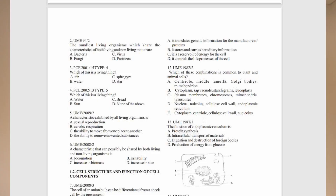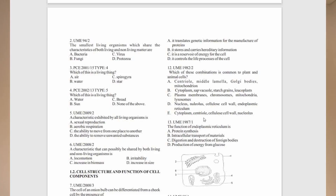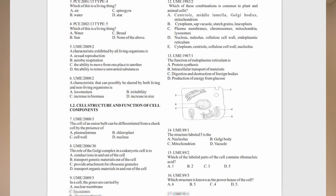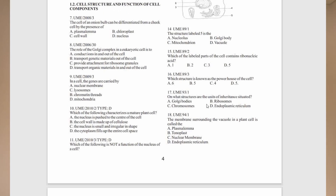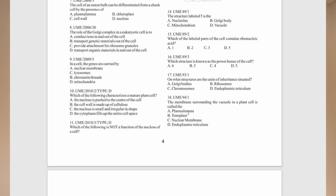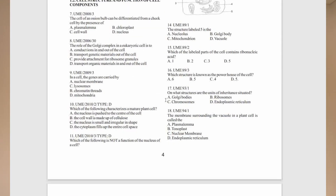Let me take one more interesting question. The membrane surrounding the vacuole in a plant cell is called what? The options are: plasmalemma, tonoplast, nuclear membrane, or endoplasmic reticulum. If you look at the diagram of the cell and apply elimination, you can see that the correct answer is the tonoplast.